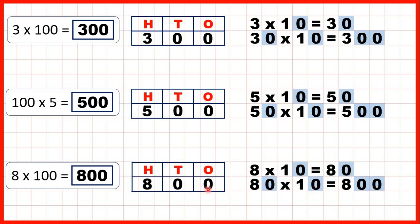So we know that multiplying by 10 moves the digits one square to the left, and if we multiply by 10 again we can move it another square to the left. That's why when we multiply by 100 — which has two zeros on the end — we can just put two zeros on the end of our number to get our answer.